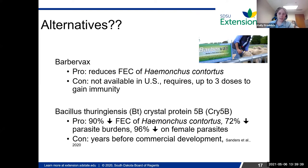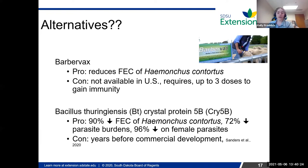The last alternative is BT crystal protein. This was some research recently done last year that has shown this BT crystal protein — what you kind of see in BT corn — is really good at reducing fecal egg counts of Haemonchus contortus and also reducing parasite burdens in sheep. But all of this research was only done in the lab, not in real animals. So it's going to be several years before any commercial development or seeing this on the market.